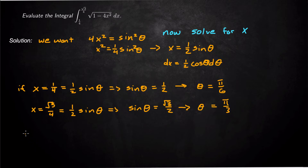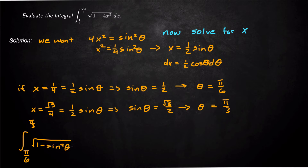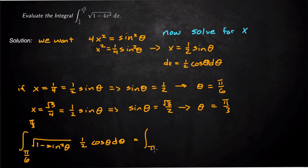So our integral changes to the integral from π/6 to π/3 of the square root of 1 minus sin²θ — because that's how we set up the substitution to work out — times dx, which we set as ½cosθ dθ. Since 1 minus sin²θ is cos²θ, this becomes the integral from π/6 to π/3 of ½cos²θ dθ.